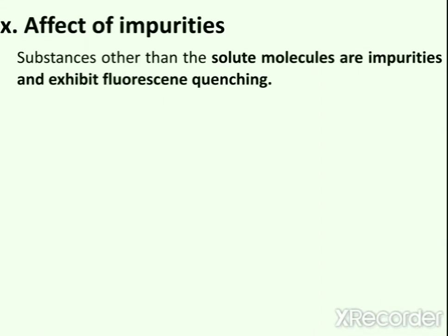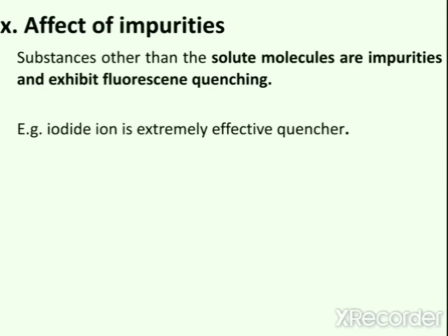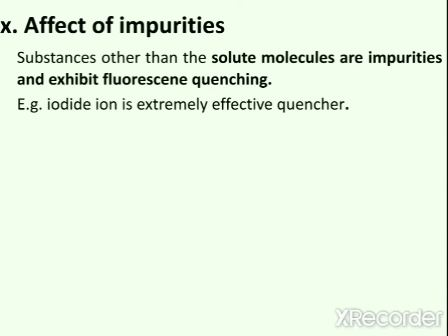Next is the effect of impurities. Substances other than the solute molecules are impurities, and they exhibit fluorescence quenching. For example, the iodide ion is an extremely effective quencher. If iodide ions are present in a sample, they will decrease the intensity of fluorescence as a result of a decrease in sensitivity of the constituents.